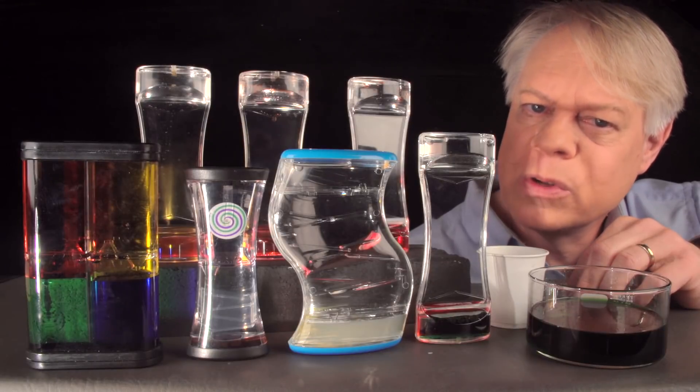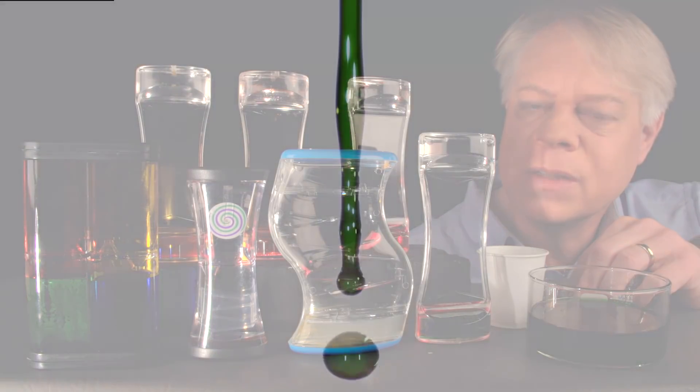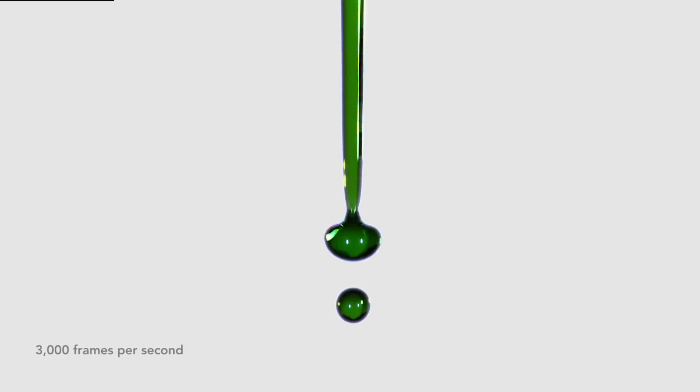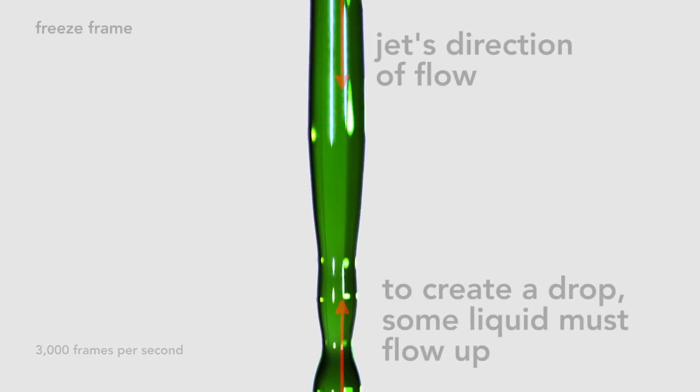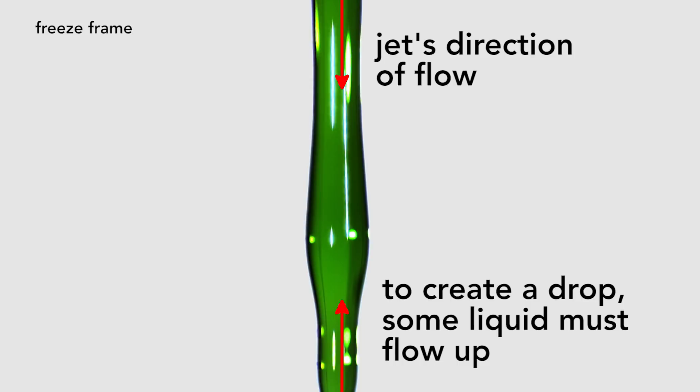To see that, look at one of the bulges that forms and disappears. These are of course failed attempts by the liquid to form a sphere. Notice what must happen for a sphere, a droplet, to form. Some liquid must travel in the opposite direction of the stream's flow.